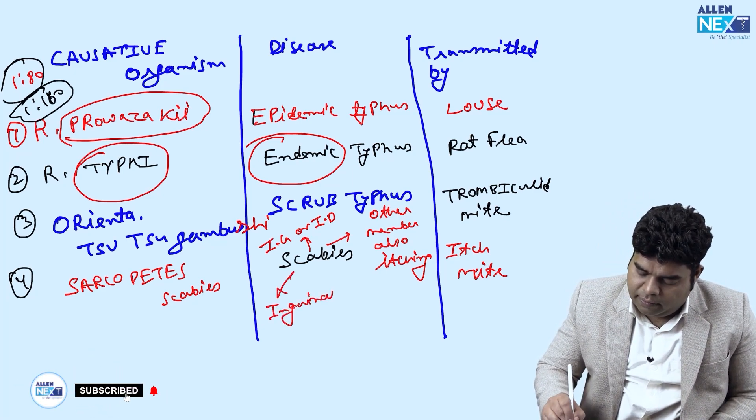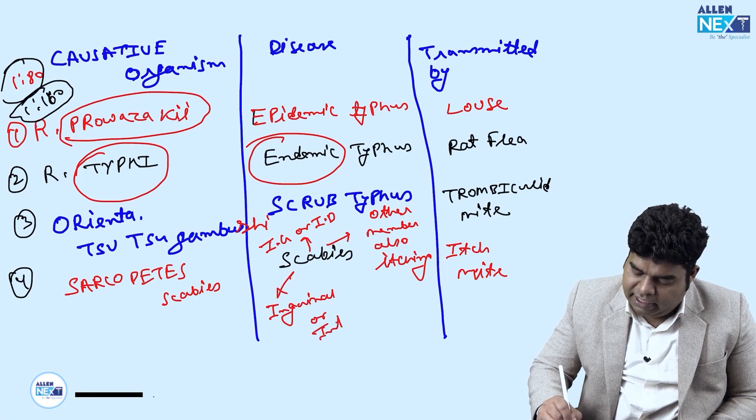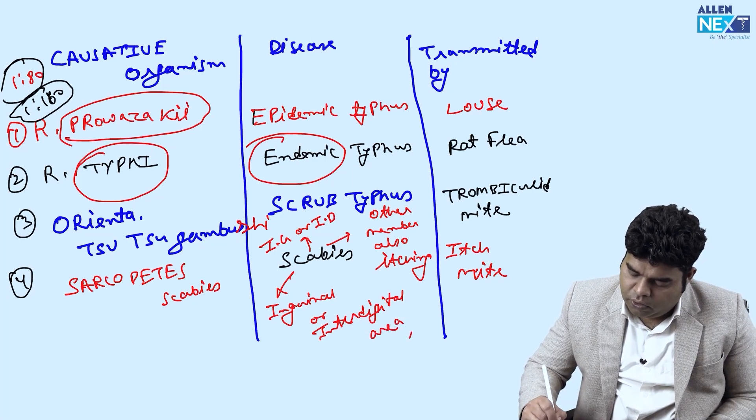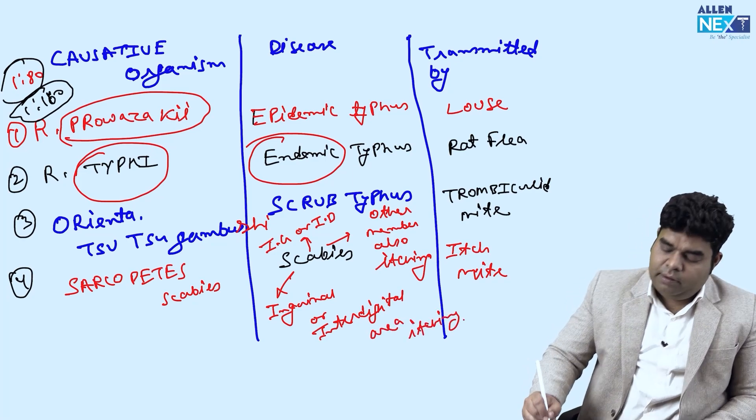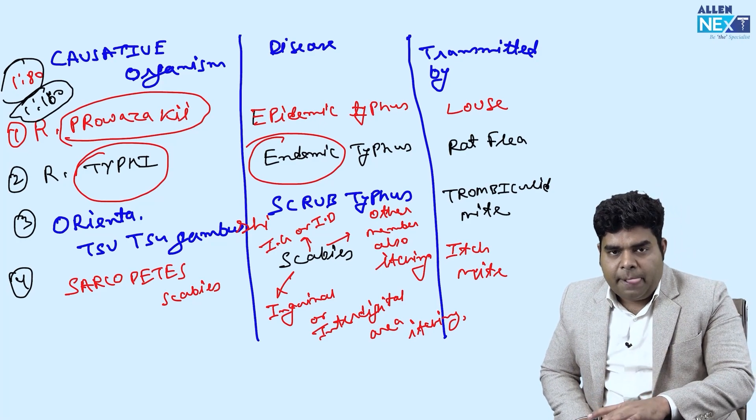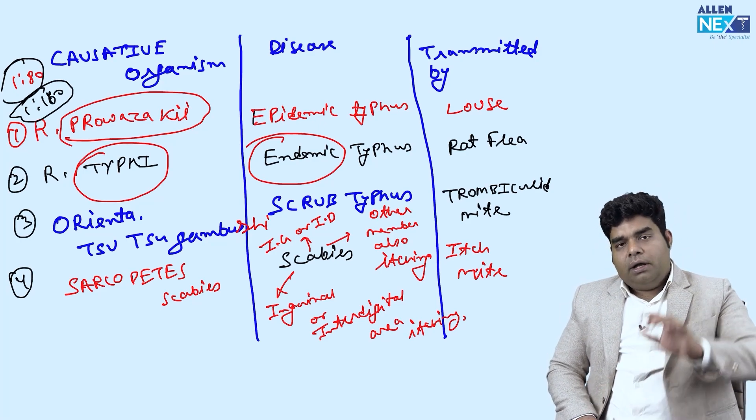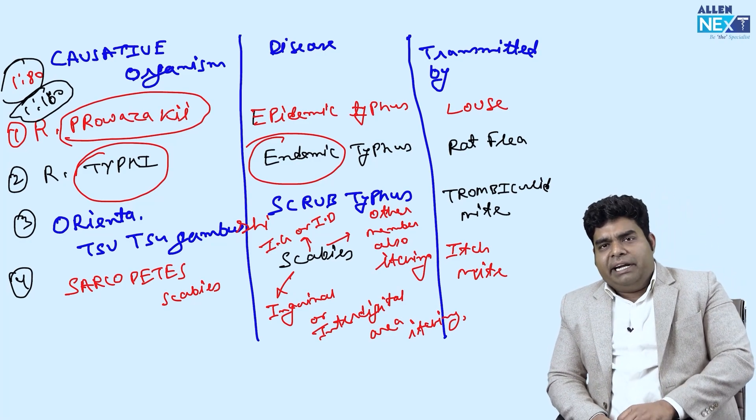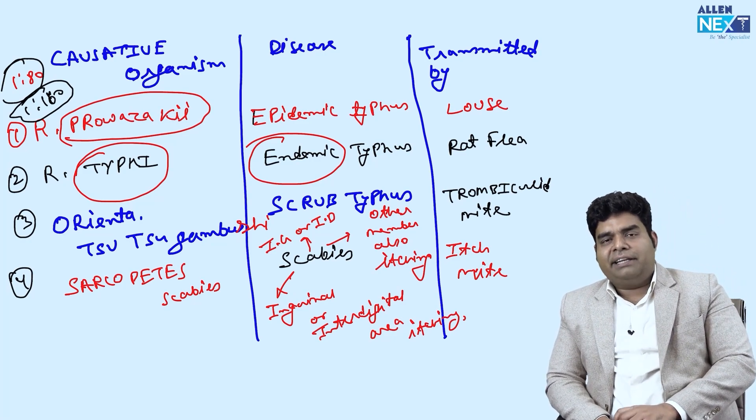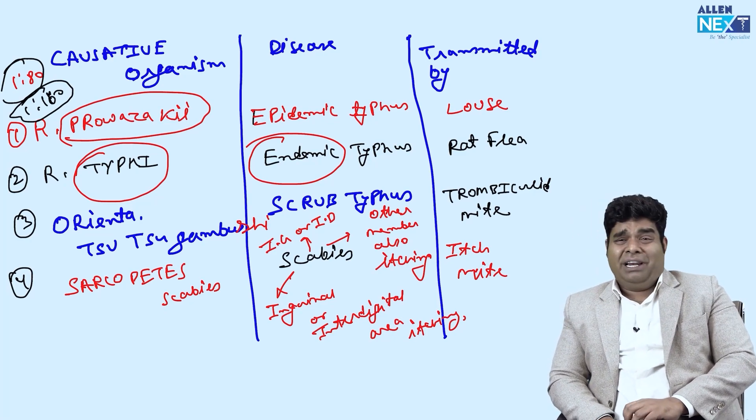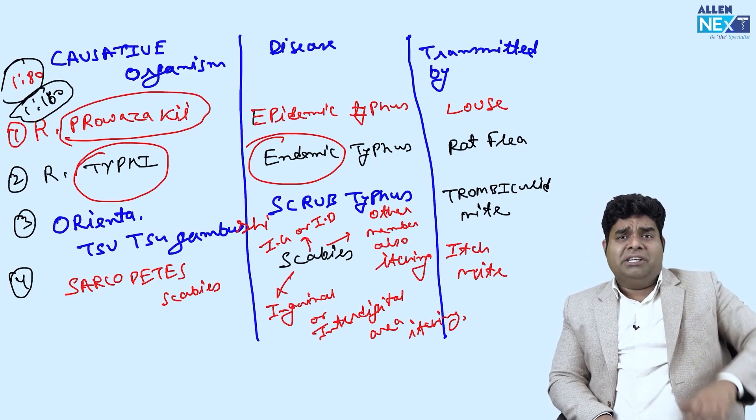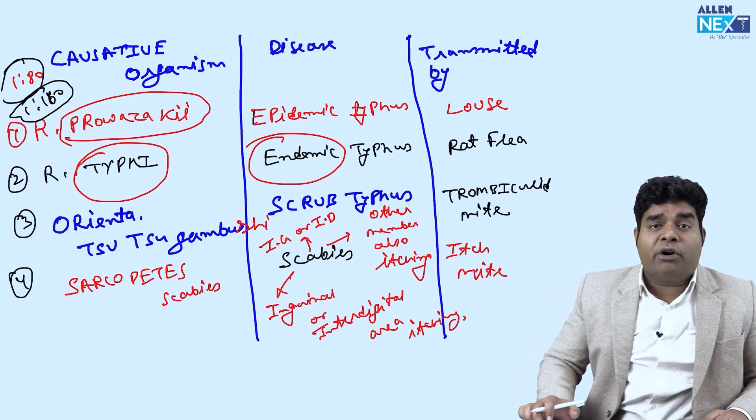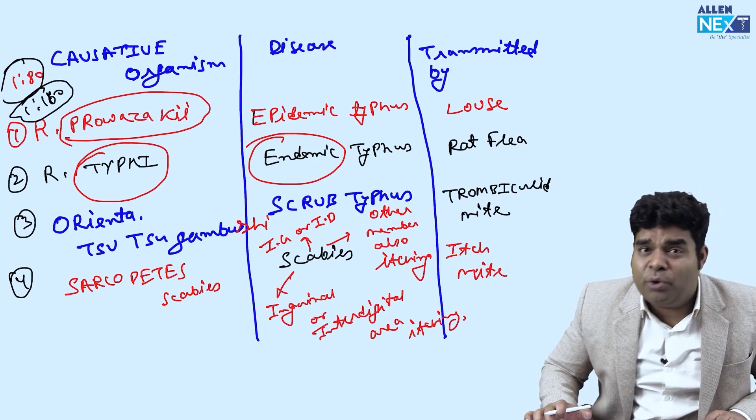In inguinal or interdigital area hint they will give or they will give the hint of other member also have. So, very common is scabies and scabies is a very common problem not only in winter season but in many tribal areas. I have seen in the hostel areas out of 50 students in the hostel 35-40 have scabies all around the year. They are itching all the time because of which they are not eating properly, they are not sleeping properly, they are malnourished and their immunity is going low.